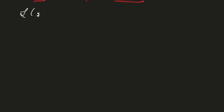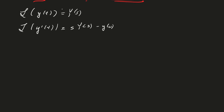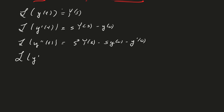Let's write these down. The Laplace transform of y(t) we define to be Y(s). The Laplace transform of y prime is s·Y(s) minus y(0). The Laplace transform of y double prime is s squared·Y(s) minus s·y(0) minus y prime of 0. So what would you guess is the Laplace transform of the third derivative? It's going to be s cubed·Y(s) minus s squared·y(0) minus s·y prime(0) minus y double prime(0).